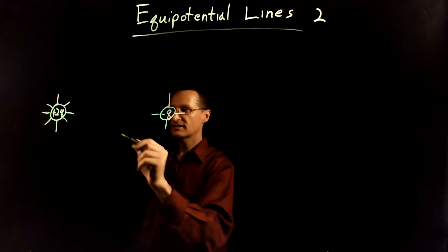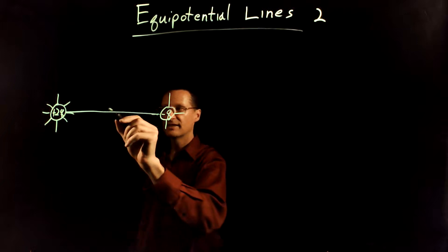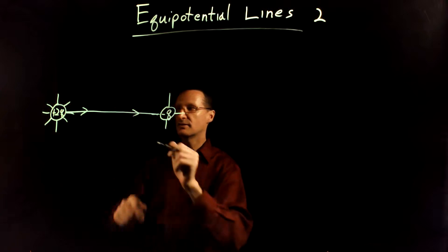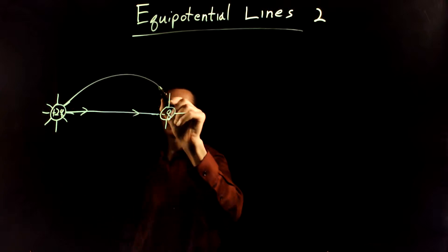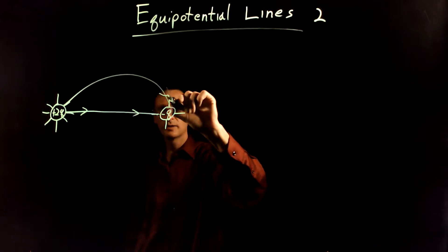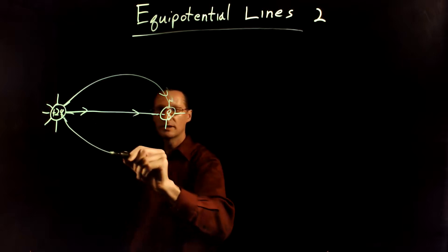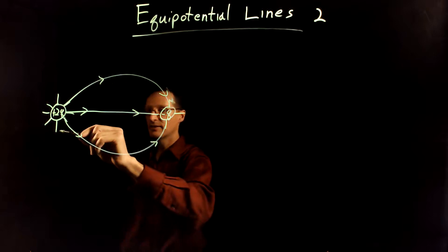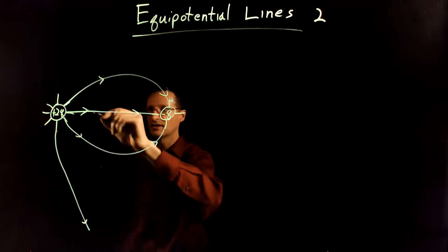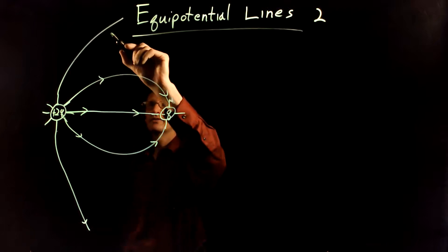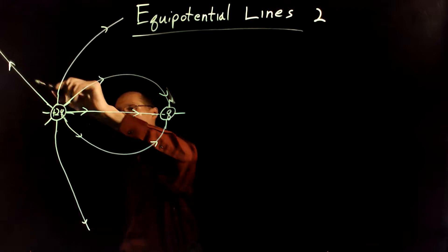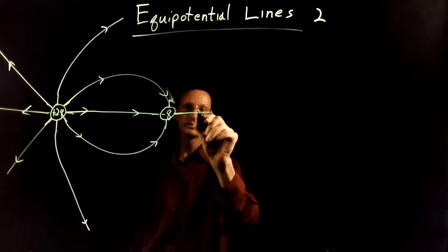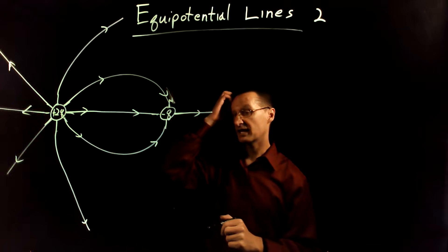This line is just going to connect directly and go from positive to negative like that. This line connects here, coming like this. And then this one connects like that — so these go from positive to negative. Then these go out to infinity; they curve just a little bit but go out to infinity like that. And these come out to infinity on that side as well.